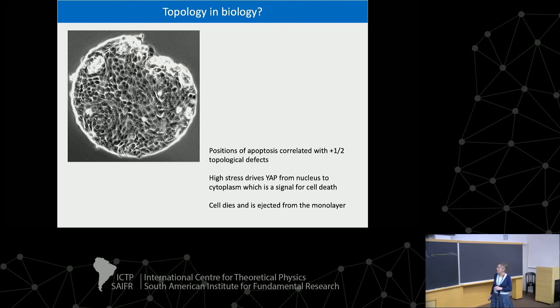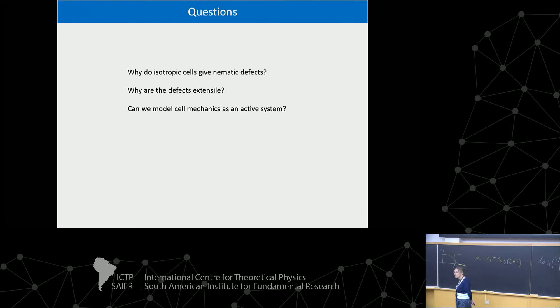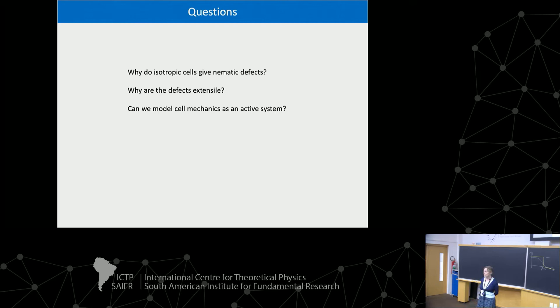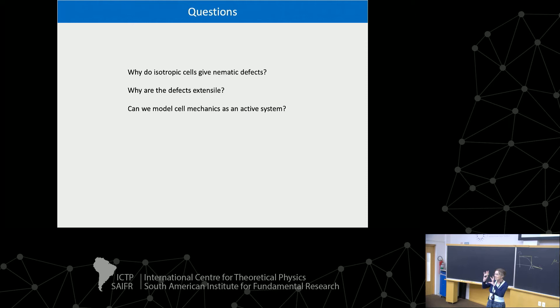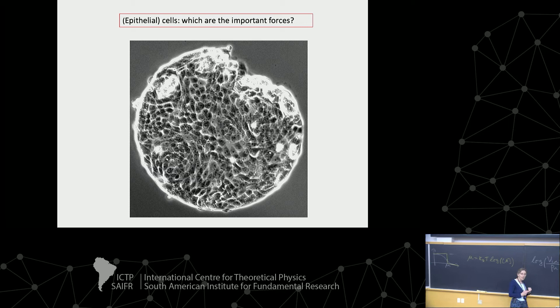We'll leave that to the biologists — the data is messy. What came out are questions: these cells are isotropic and round on average, so why can round cells give topological defects? And is it right to think of these as an active system — can we model them? We've modeled them as a continuum, but it might be nice to have a system where you can actually see individual cells. So what I'm going to describe is a phase field model.